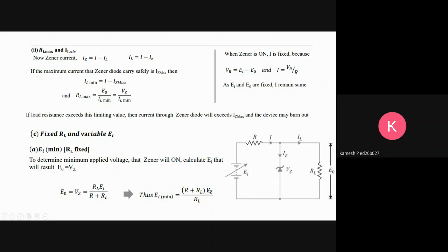Since Vz equals E0 at any point, the formula transforms: Vz equals RL×Ei/(R+RL), which changes to Ei minimum equals (R+RL)×Vz/RL.